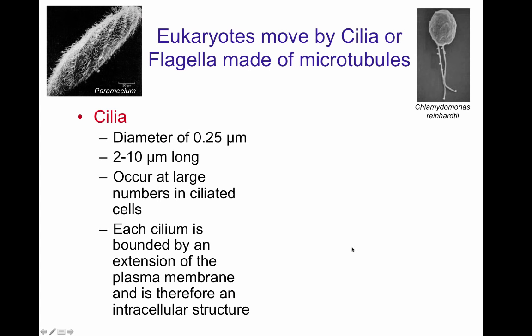Eukaryotes can either move by cilia or by flagella. Both these structures are derived from microtubules. Cilia are about 0.25 micrometers in diameter, but they're not very long compared to the cell — between 2 to 10 micrometers long. A traditional eukaryotic cell could be from 10 to 30 micrometers in length, so the cilia are relatively small.